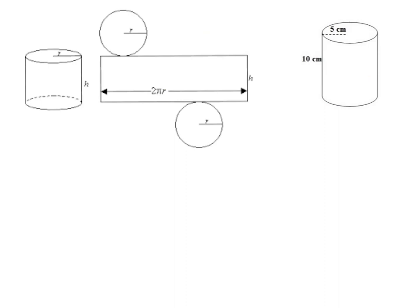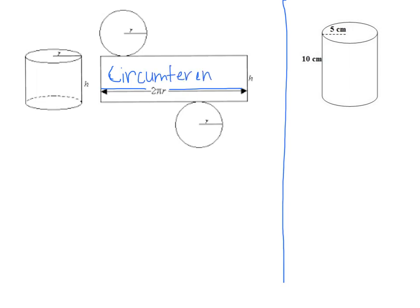Here is a cylinder and the net of a cylinder. We see that the length of this rectangle is 2πr. Now, 2πr is the circumference of a circle. This makes sense because if we were to fold this shape up and make it into a cylinder, the length of this rectangle would equal the circumference of each circle. So it makes sense that the length would be 2πr. For surface area, we need length times width of the rectangle — and the width of this rectangle is the height of the cylinder — so 2πr times h.